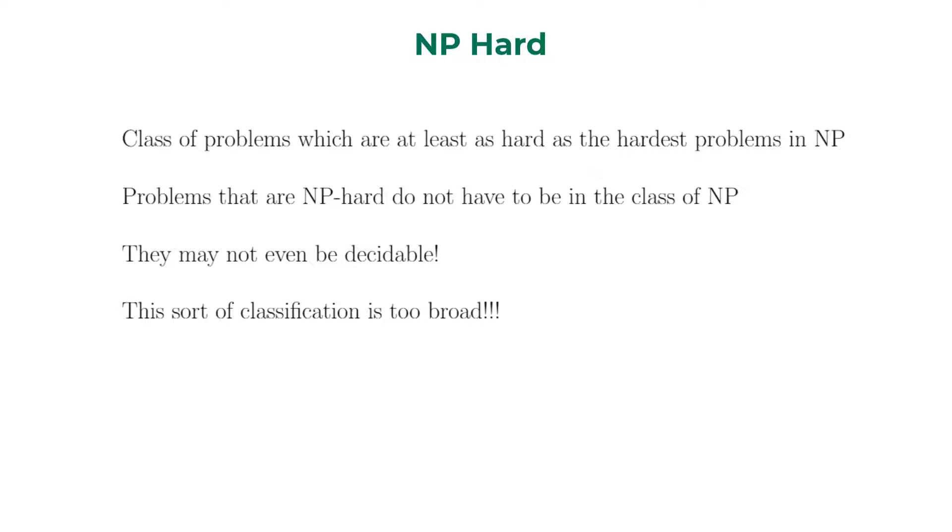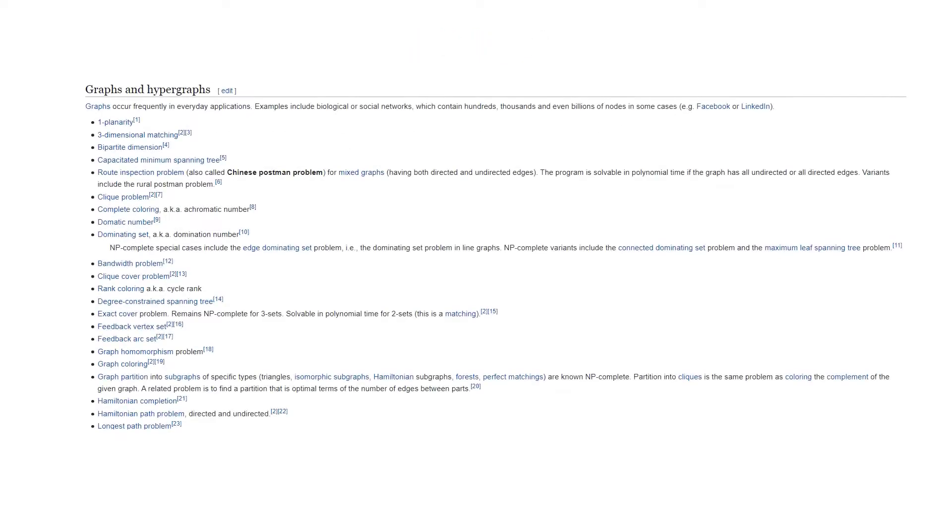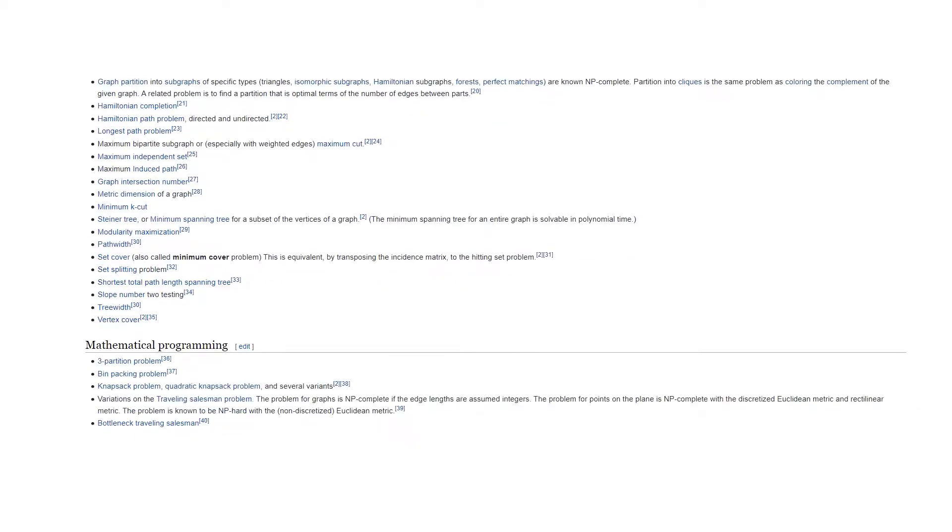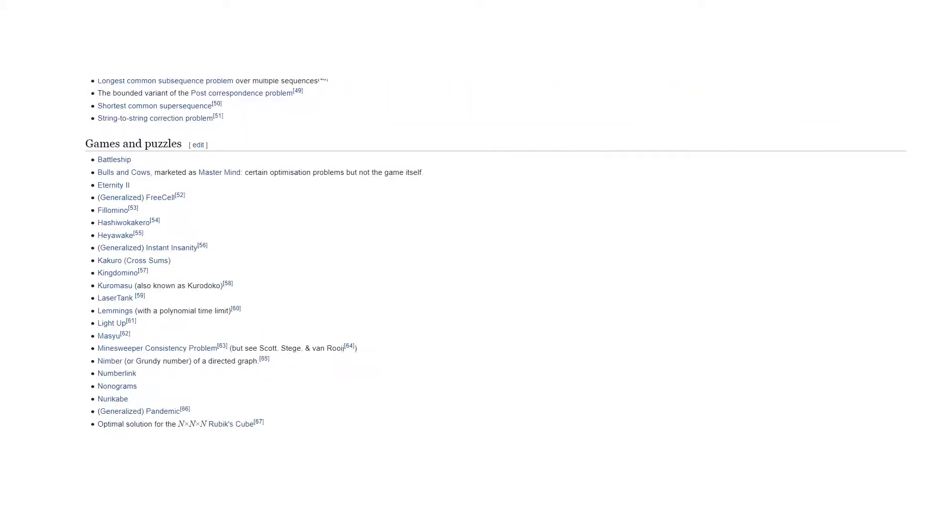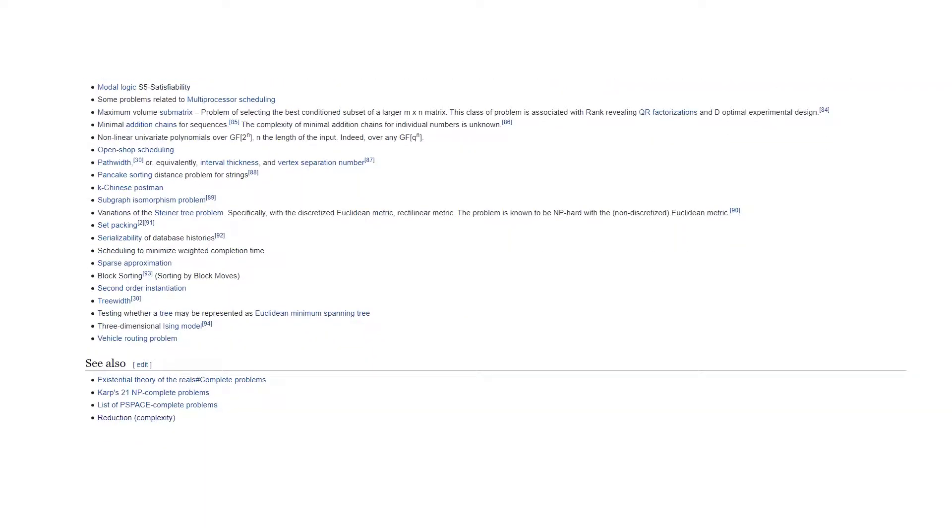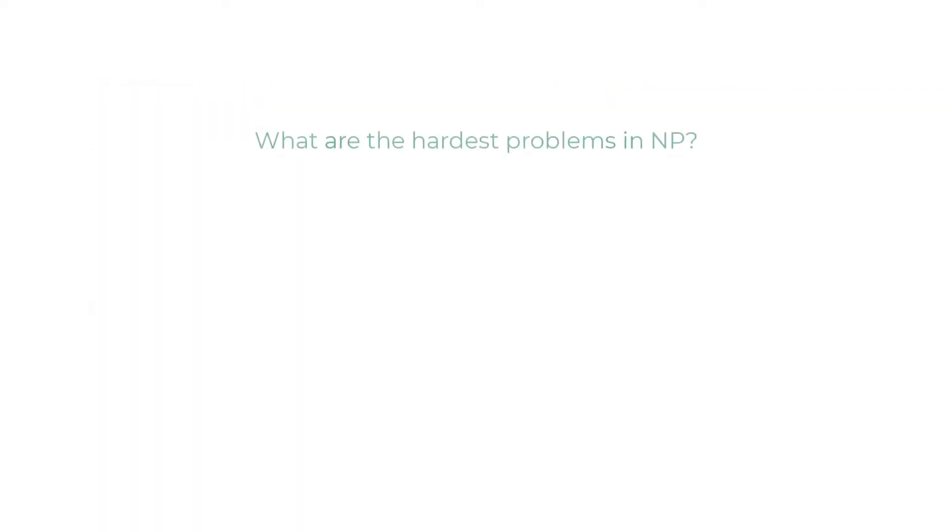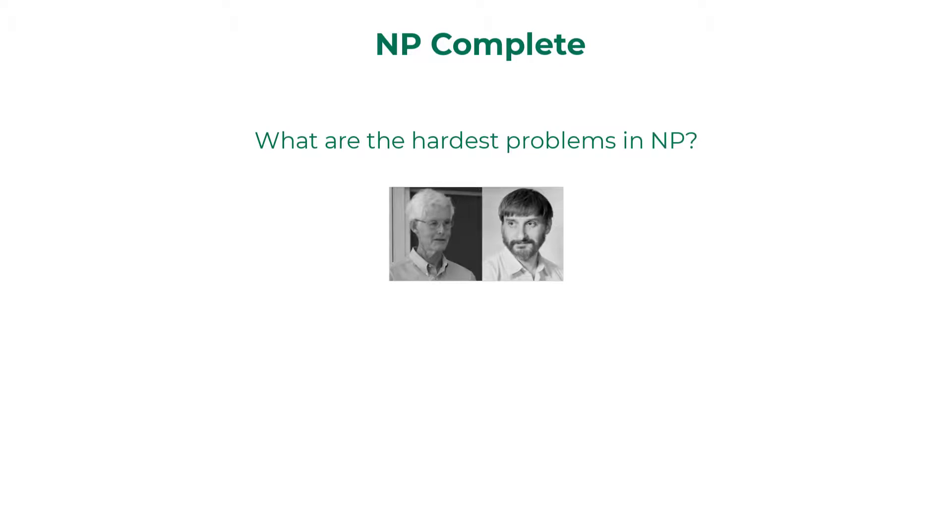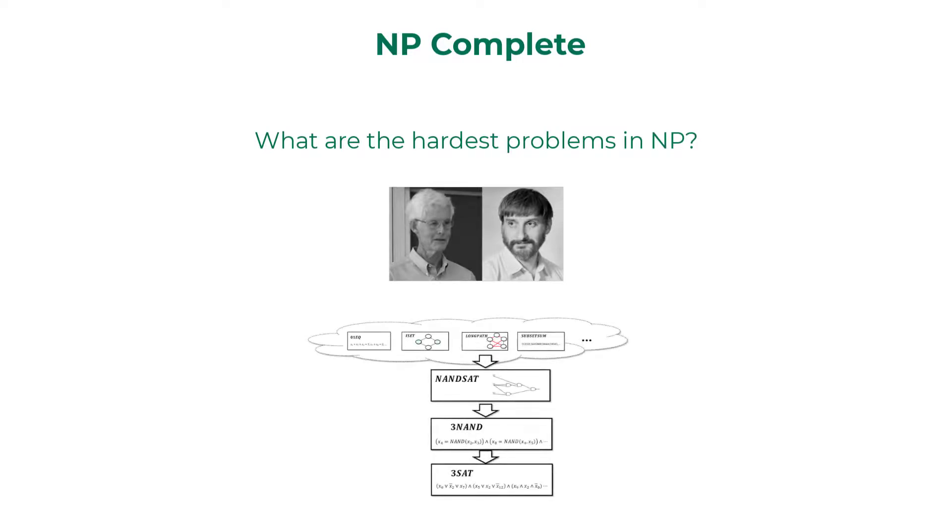So classifying a problem to be NP hard talks very little about the complexity. As many problems of real-world importance are in the class of NP, a better question to ask is, are there problems in NP that are definitely not known to be decided in polynomial time? Turns out there are. In early 1970s, Cook and Levin discovered certain problems in NP whose individual complexity is related to that entire class.